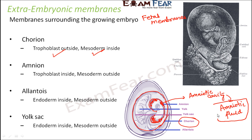The amniotic fluid also consists of cells from the skin of the embryo. This means the amniotic fluid can help determine any kind of genetic disorders or chromosomal abnormalities that might be present in the embryo.